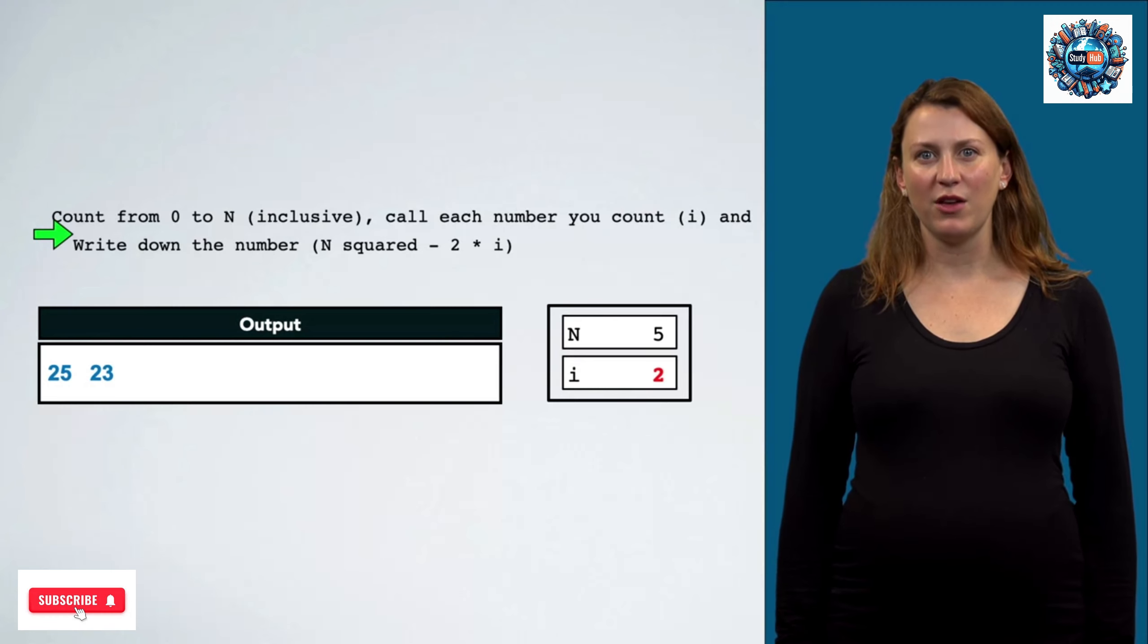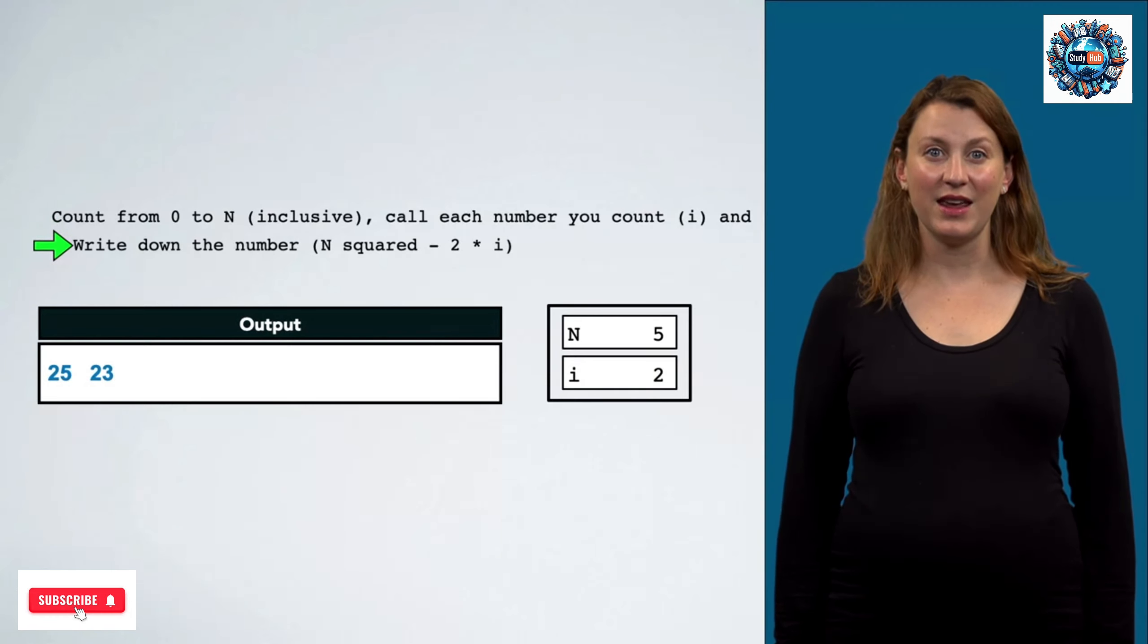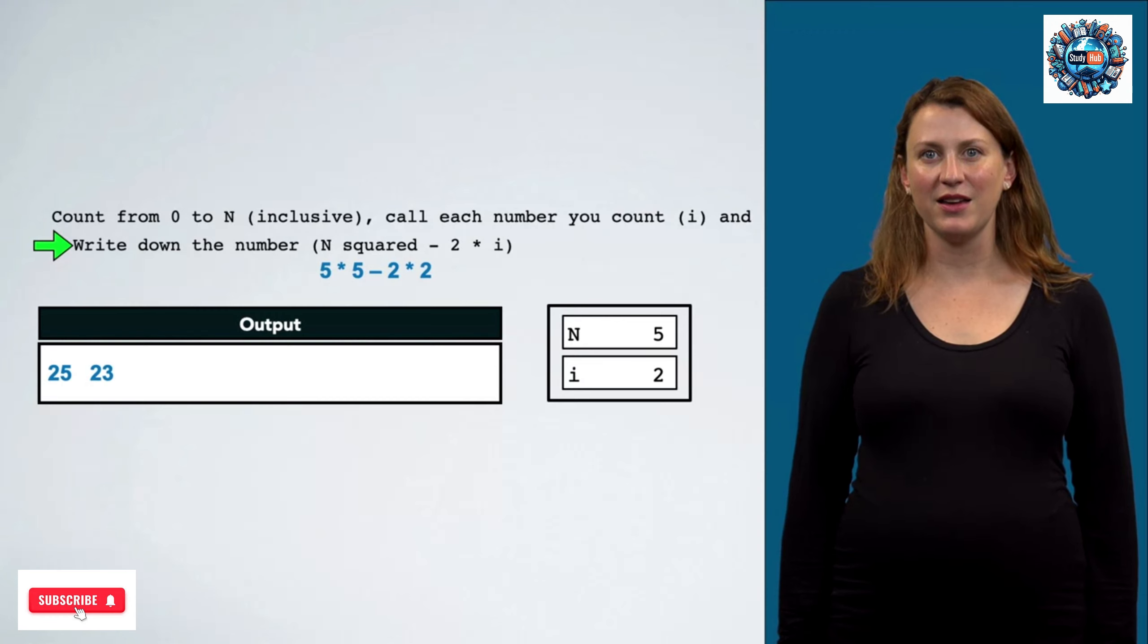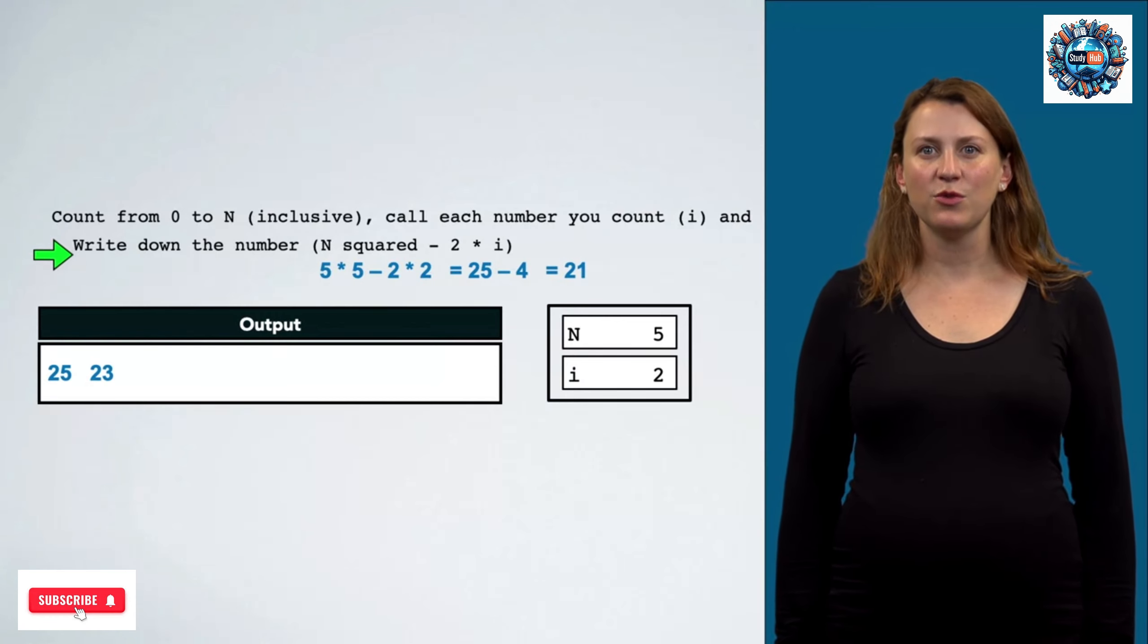So now we're working on i with a value of 2. Once again, n squared minus 2 times i, which is 25 minus 4. The value is 21. And we will write this to our output box.